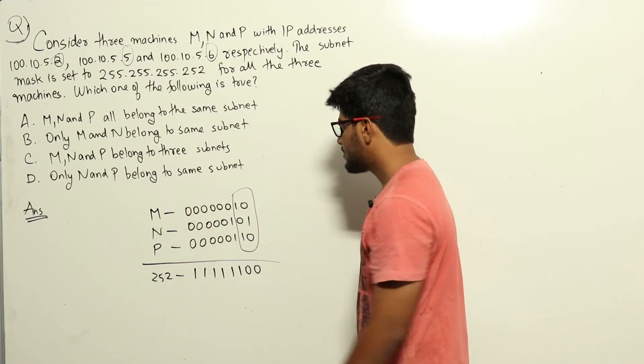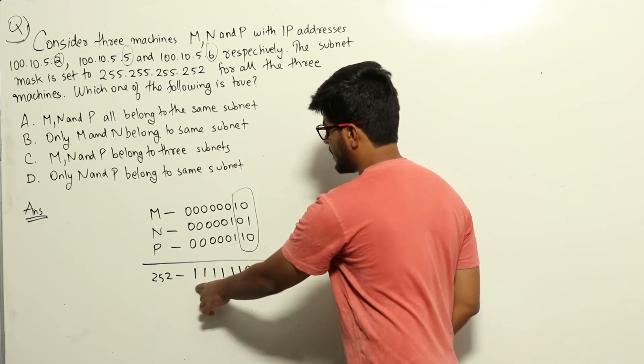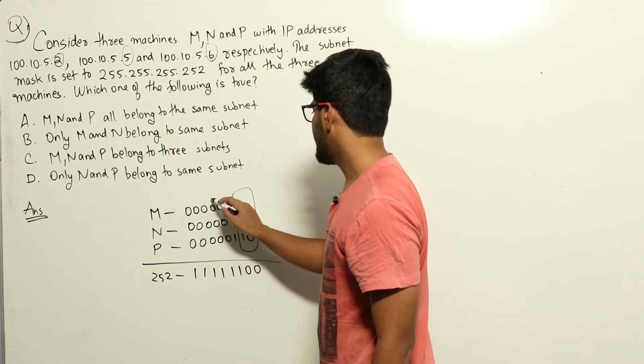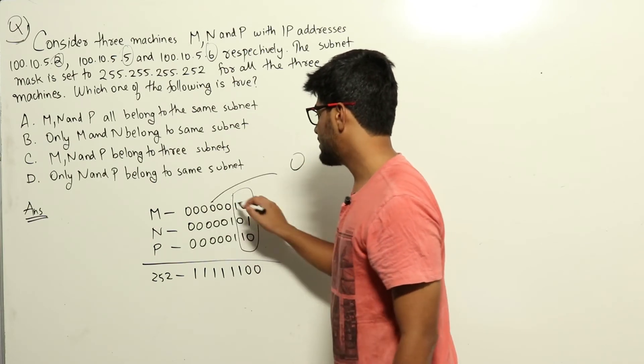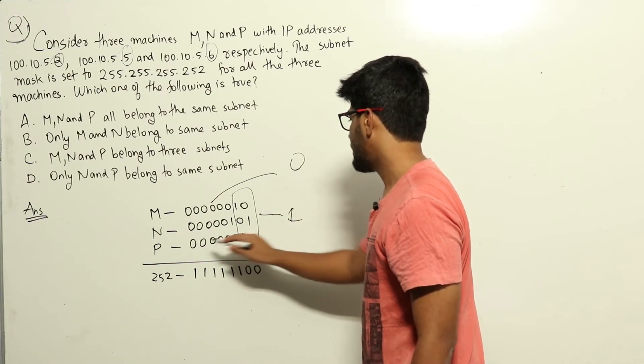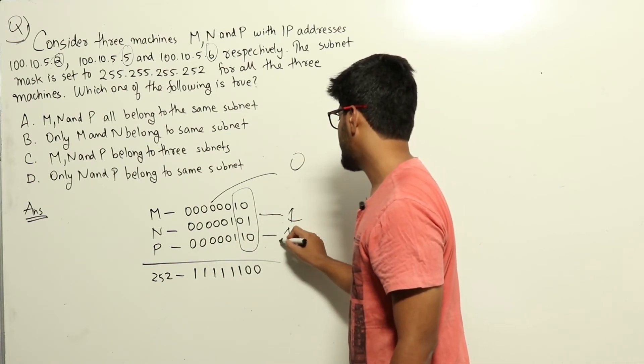Only in the first 6 bits, which is 1 in the subnet mask, we need to worry about in M, N and P. M will be giving 0 in the first 6 bits. N in the first 6 bits is 1 and P in the first 6 bits is 1.